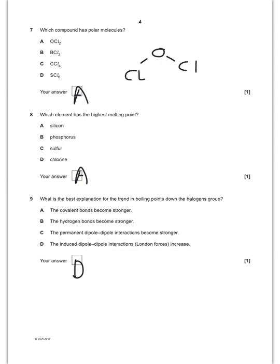Which element has the highest melting point? The answer is going to be A, silicon. Silicon, of course, is giant covalent. Phosphorus, sulfur and chlorine are all simple molecular.